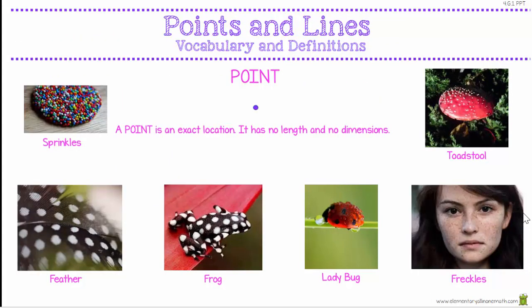So let's look at the point. The point is an exact location. It has no length and no dimension. As you can see in my PowerPoint, my point has got dimensions, but that's only just so that you can see it. In real life we call lots of things points or dots — the sprinkle on the chocolate, the dots on the toadstool, even freckles, ladybugs, the frog and the feather.